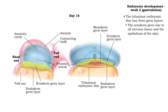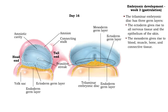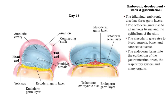The ectoderm gives rise to all nervous tissue and the epithelium of the skin. The mesoderm gives rise to blood, muscle, bone, and connective tissue. The endoderm forms into the epithelium of the gastrointestinal tract, the respiratory system, and many organs.